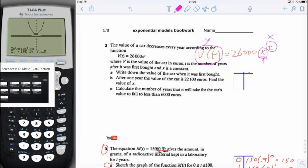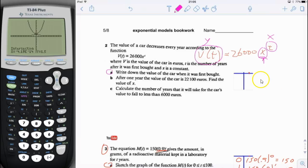First it says, write down the value of the car when it was first bought. It seems like you don't have any way of knowing that, but let's see. If we know when it was first bought, what time would it be? t is the number of years after it was first bought, so t would be 0 when it's new. So let's do this.